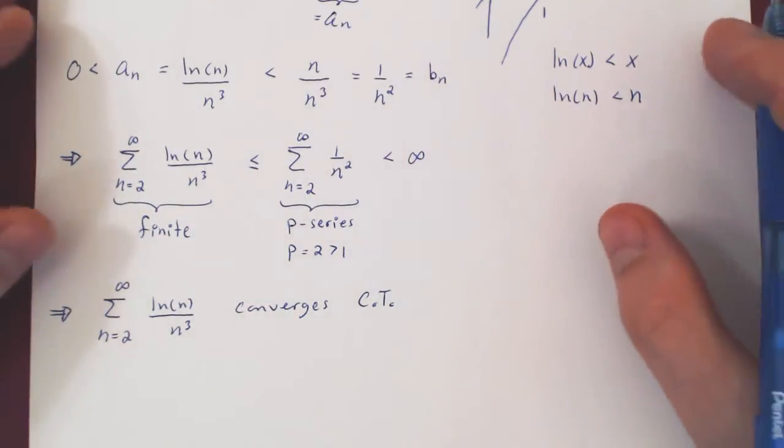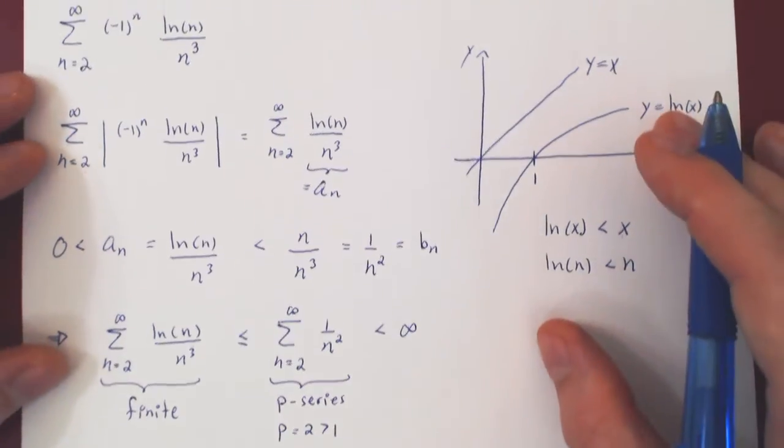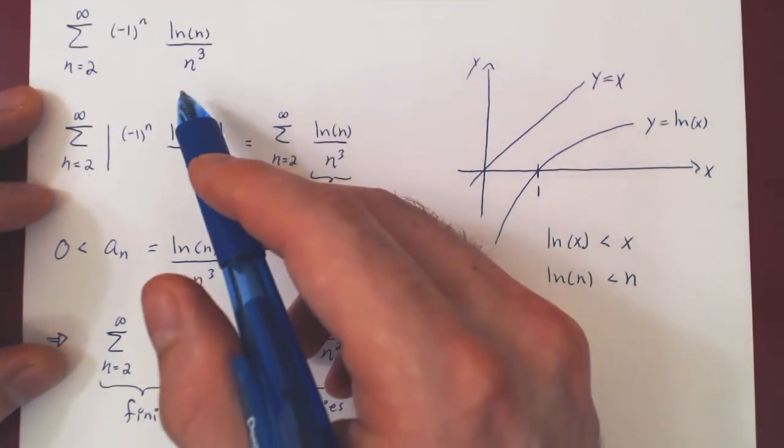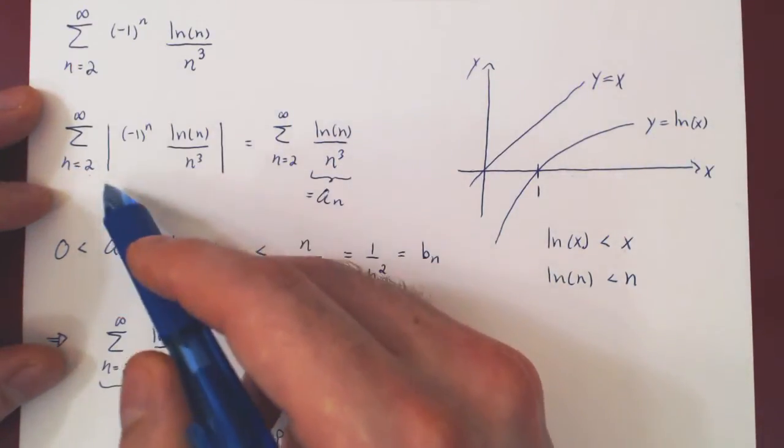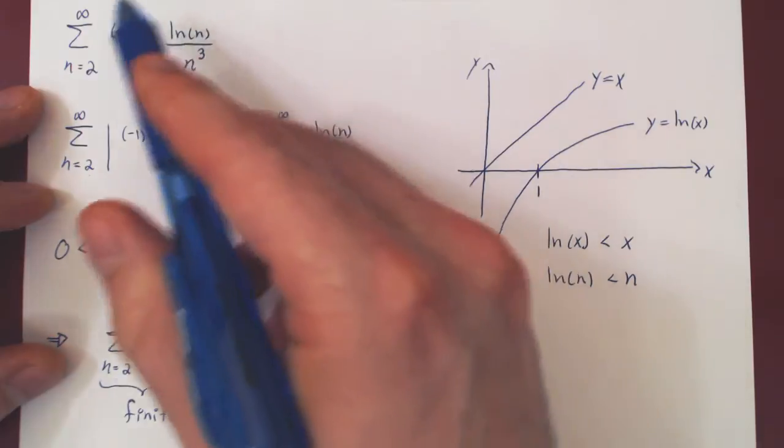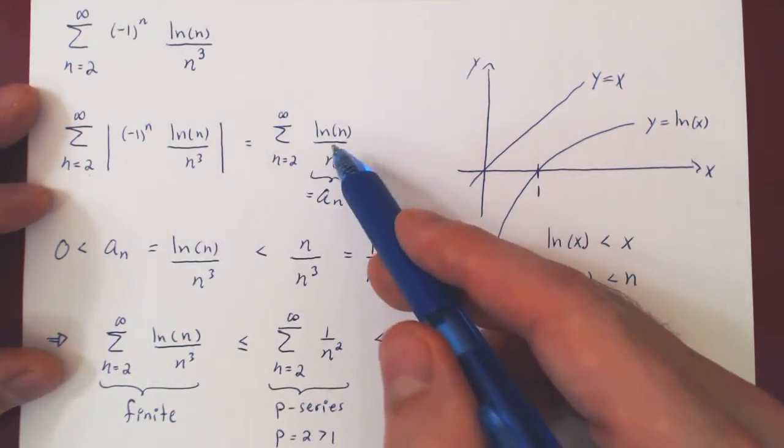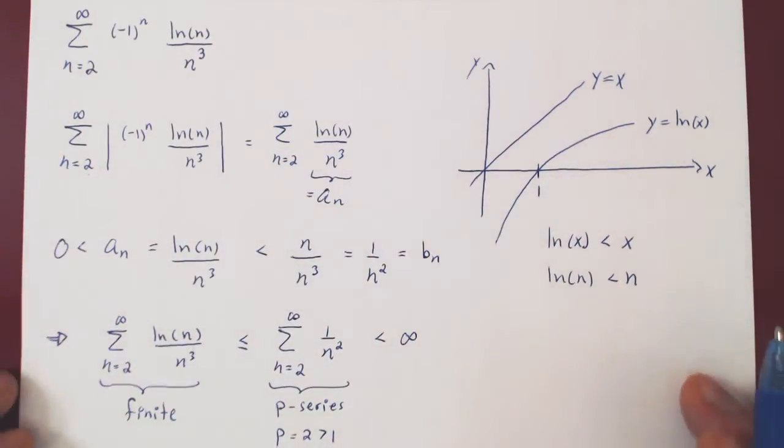But now think of what we've done. We've proved, with the help of the comparison test, that the series of the terms in absolute value does converge. This is nothing but absolute convergence.